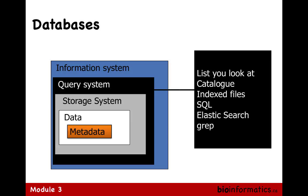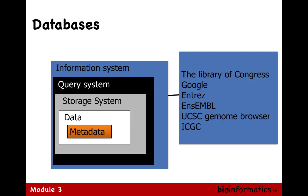An information system is the whole package. Google is an information system; the Library of Congress is a library system. Entrez at NCBI is an information system. Ensembl at EBI, the UCSC genome browser covering multiple organisms, and ICGC are all large information systems with parts talking to each other. Under the big label of an information system are many layers: for example NCBI allows you to submit data, download data, learn through a teaching section, use analysis tools, and access research from NCBI's own core research group.